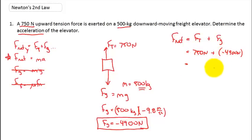And when we do the addition here of 750 plus a negative 4,900, I end up with a net force which is negative, which is a downward direction. Negative 4,150 Newtons is my F net.